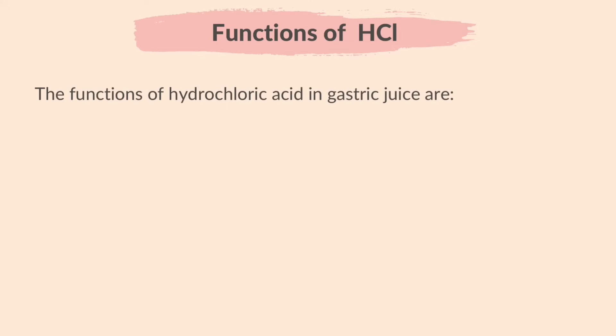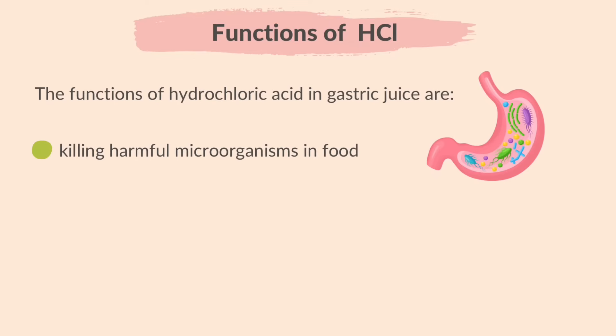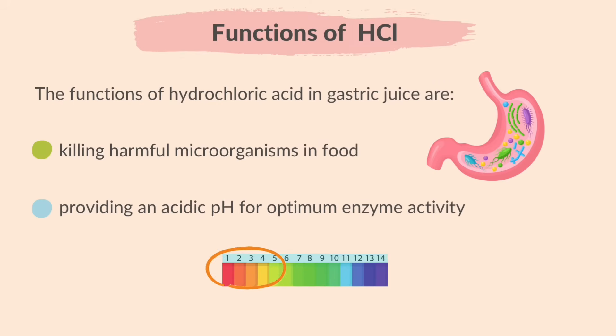Now let's learn the functions of hydrochloric acid in gastric juice. Gastric juices are fluids produced by the stomach, and one of the fluids produced is hydrochloric acid. The functions of hydrochloric acid in gastric juice are: it kills harmful microorganisms in food, and it provides an acidic pH for optimum enzyme activity. Pepsin, which is produced in the stomach, has a low optimum pH, so the hydrochloric acid provides the ideal acidic environment for pepsin to work at its fastest rate.